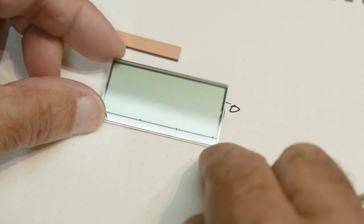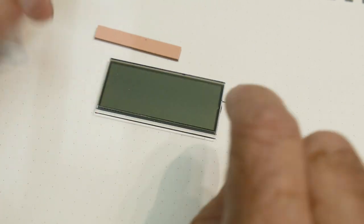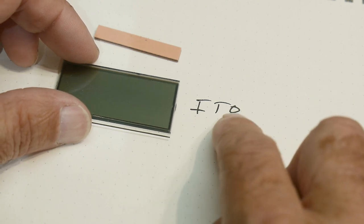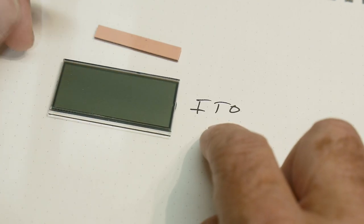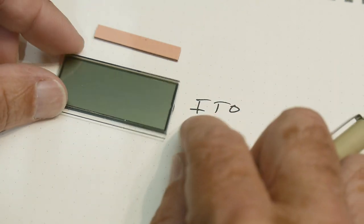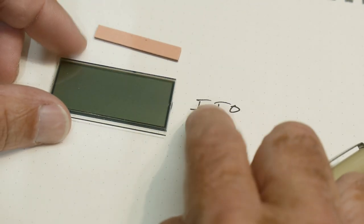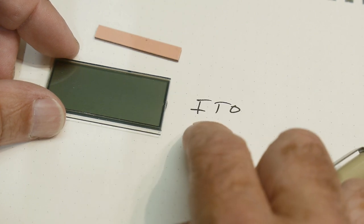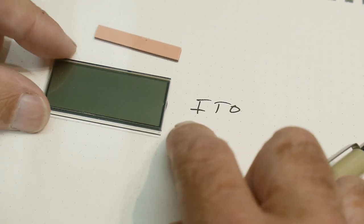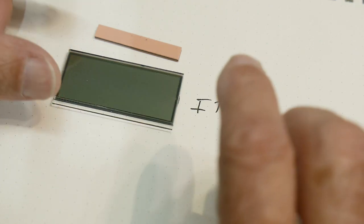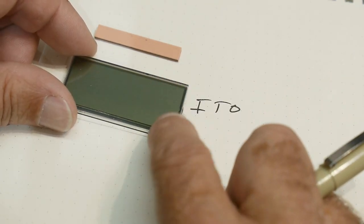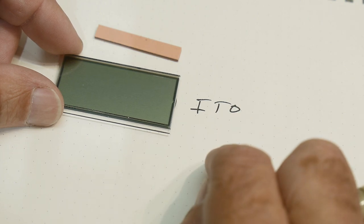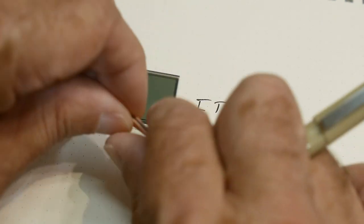Once you've invented transparent conductors, can you solder to them? How do you get electrical contact on these things? Well, you can't solder to indium tin oxide, it just doesn't work. You have to find another way of connecting these transparent electrodes to a PC board.